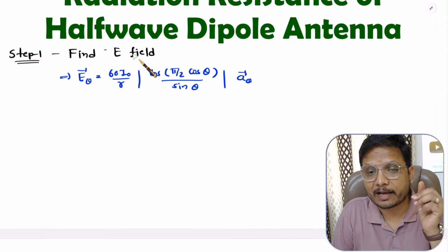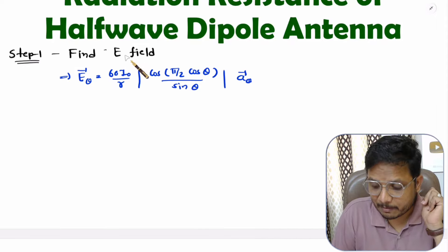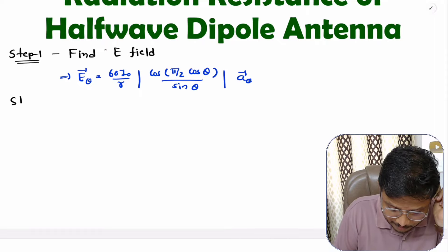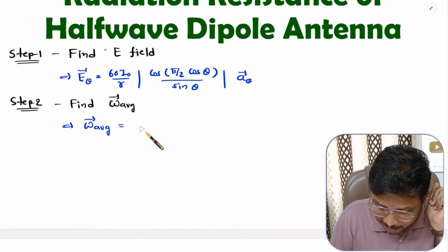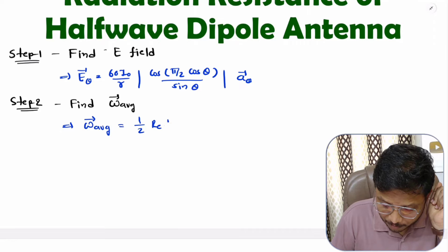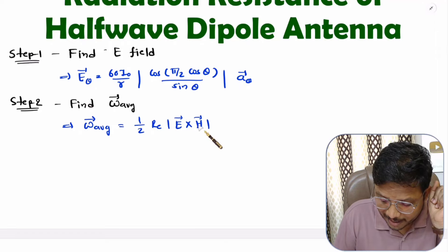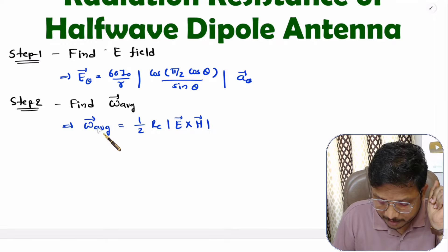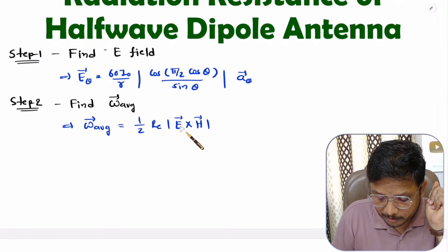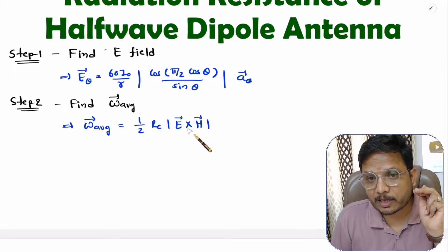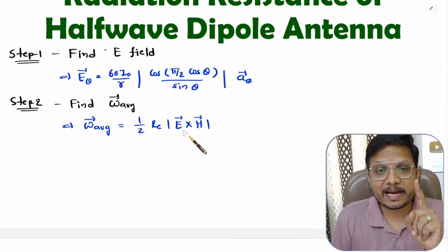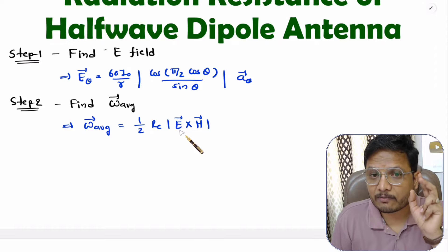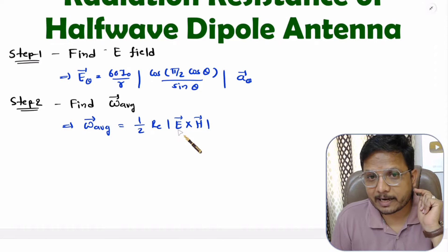Once we have the electric field, we can identify average power density. In the second step, average power density is calculated as one-half of the real component of E cross H. Once we have the electric field we can also find the magnetic field, and from those two we identify average power density.